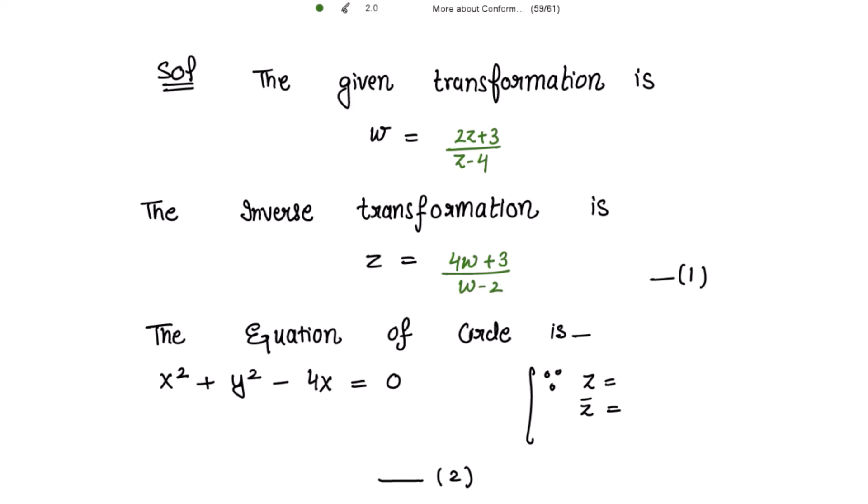Now the equation of the circle is given to us as x² plus y² minus 4x equals 0, because we have to show that this transformation maps this circle onto the straight line. So we need to write this equation of the circle in terms of z and z̄ first.